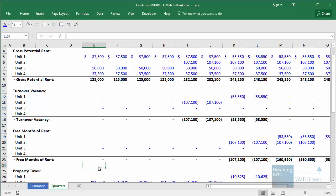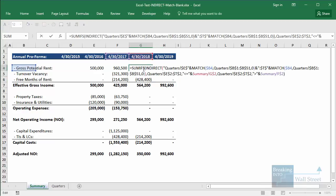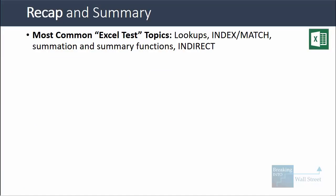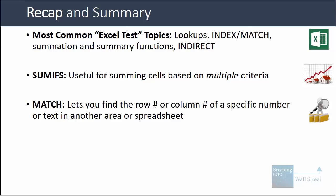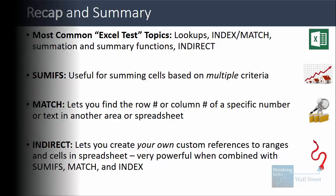You could do the same check for turnover vacancy, property taxes, insurance, utilities, and so on. To recap: the most common Excel test topics are lookup functions, INDEX and MATCH, summation functions, and the INDIRECT function. SUMIFS sums cells based on multiple criteria. MATCH finds the row or column number of specific text or a number in another area. INDIRECT lets you create custom variable references to ranges and cells — very powerful when combined with SUMIFS, MATCH, and INDEX, enabling flexible formulas to answer case study and modeling test questions.